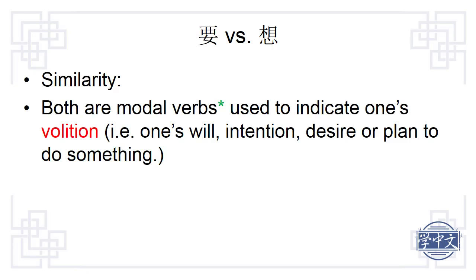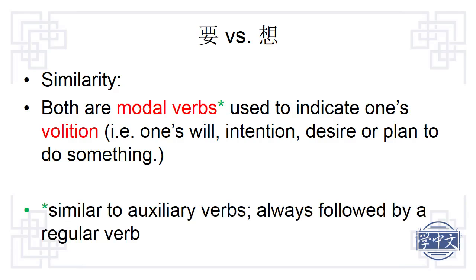Both are modal verbs used to indicate one's volition. Volition generally refers to one's will, intention, desire, or plan to do something. A modal verb, sometimes called an auxiliary verb, is always followed by a regular verb.